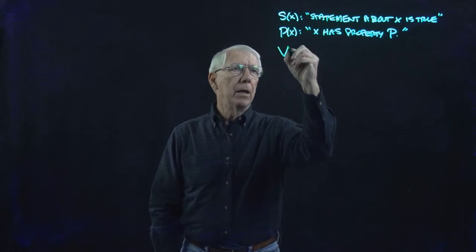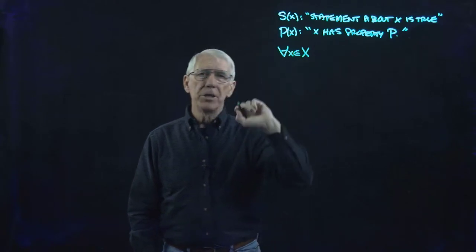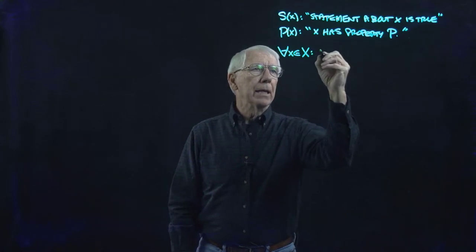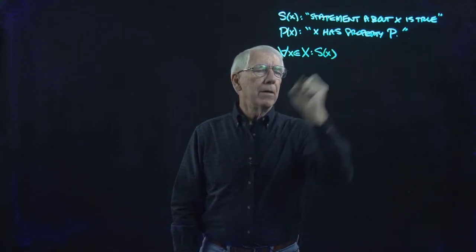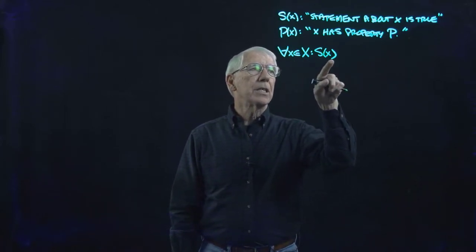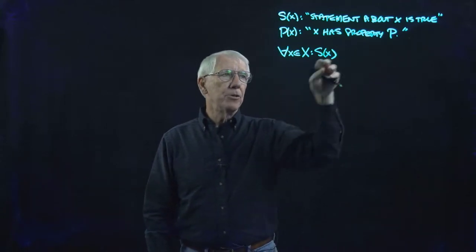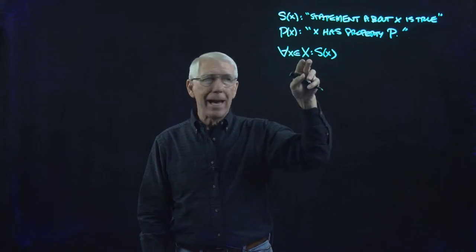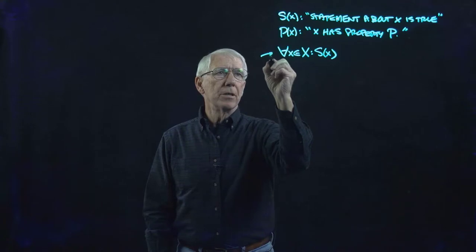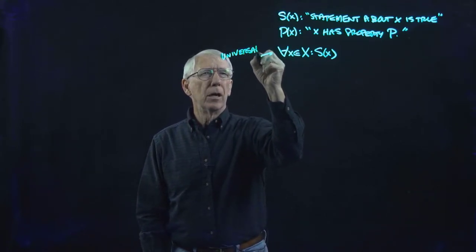When we write this upside-down A — for all elements of some arbitrary set capital X — and then S(X), this says for every X, S(X) is a true statement. This statement about X is true. Or I could substitute P and say for every X in capital X, X has property P. That is what we call the universal quantifier.